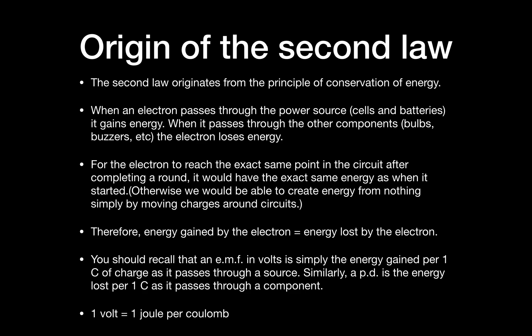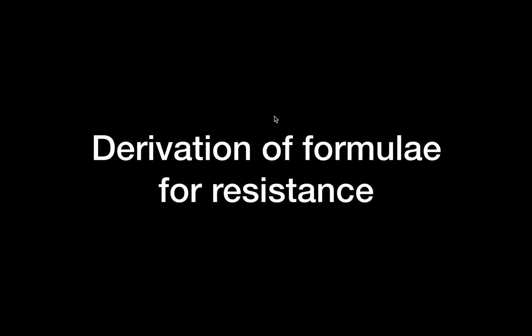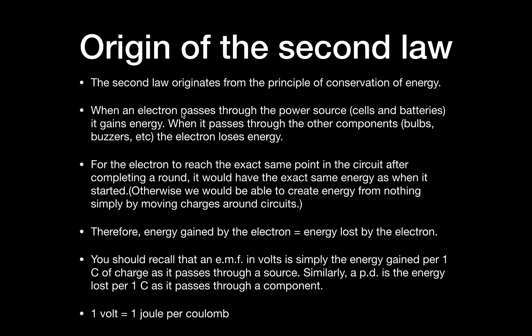The first law originates from conservation of charge — the number of charges entering a point equals the number exiting in the same time interval. The second law originates from conservation of energy. Electrons gain energy when passing through a power source such as a cell or battery, and lose energy when passing through components like bulbs or buzzers, which convert that energy to light and heat.